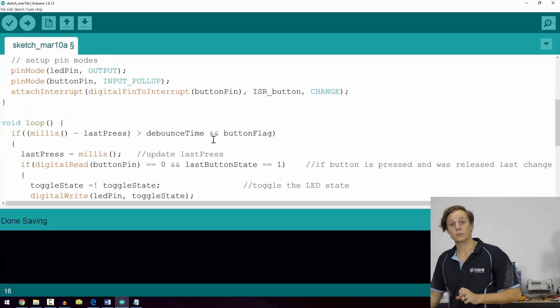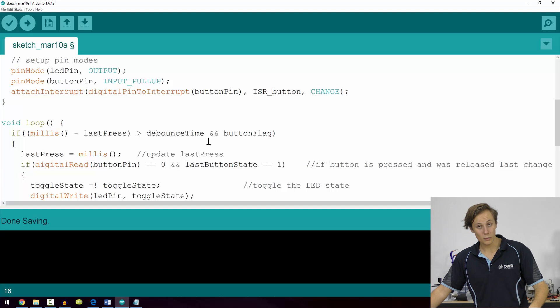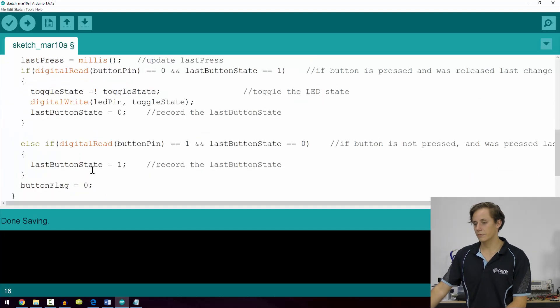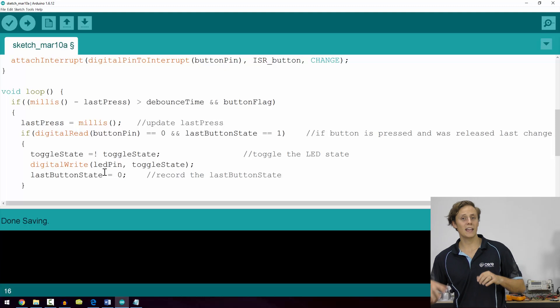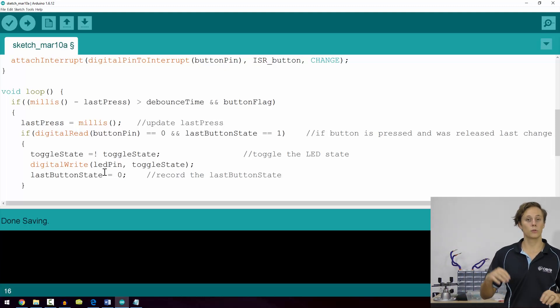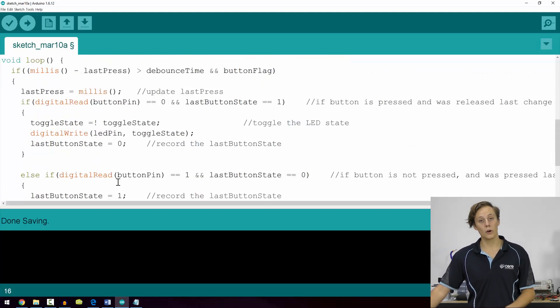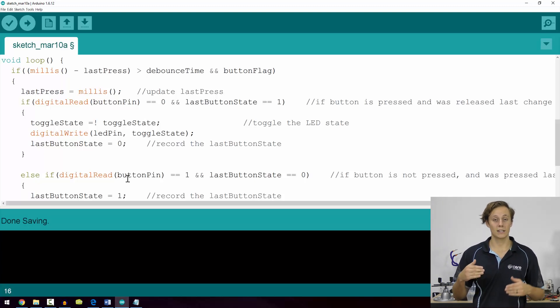It can only run that toggle function if the interrupt service routine has already been run. In other words, if it has detected a change, be it a press or a release. Then the only other thing we've added in is button flag is equal to zero. In other words, when it executes the toggle function including all of the debouncing, no matter whether it's a press or a release, button flag is set to zero, which means it will not run that section of code until our interrupt service routine has run again to reset that flag.